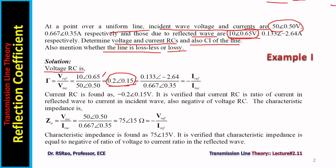Current reflection quotient is the current in the reflected wave divided by the current in the incident wave. The current in the reflected wave is 0.133 at angle 0.35. Considering these two values, we get 0.2 angle 0.15. Note that it equals minus I-reflected by I-incident. So the current RC is found as minus 0.2 angle 0.15. Voltage reflection quotient equals the negative of the current reflection quotient — these two quotients differ in sign polarity.